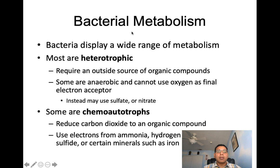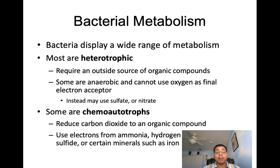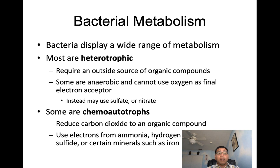Bacteria have a remarkable range of metabolic abilities. Most bacteria are heterotrophic — they require an outside source of organic compounds, just like animals do. Some are anaerobic and cannot use oxygen as their final electron acceptor; instead they use sulfate or nitrate. Other bacteria are chemoautotrophs — they reduce carbon dioxide to an organic compound using electrons derived from chemicals such as ammonia, hydrogen gas, hydrogen sulfide, or minerals like iron.